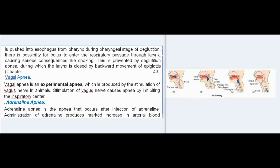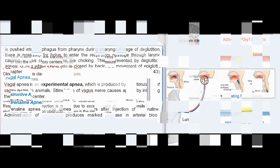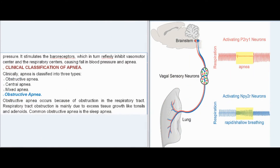Adrenaline apnea is the apnea that occurs after injection of adrenaline. Administration of adrenaline produces a marked increase in arterial blood pressure, which stimulates the baroreceptors, which in turn reflexly inhibit the vasomotor center and the respiratory centers, causing fall in blood pressure and apnea.